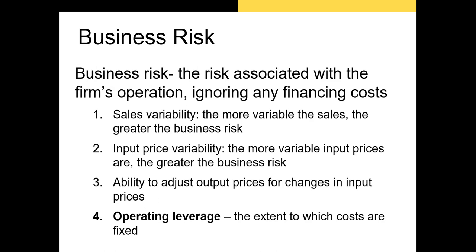Finally, some firms require a large amount of fixed capital before they can produce goods. The extent to which costs are fixed is called operating leverage. Auto manufacturers are a great example of firms with high operating leverage — they're riskier because a small decline in sales revenue hurts them far more relative to firms with mostly variable costs.